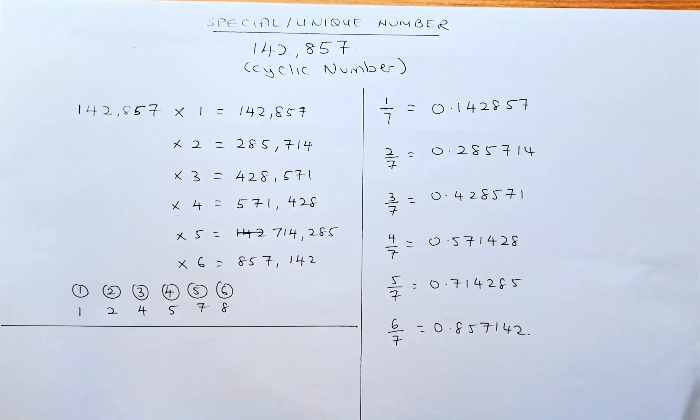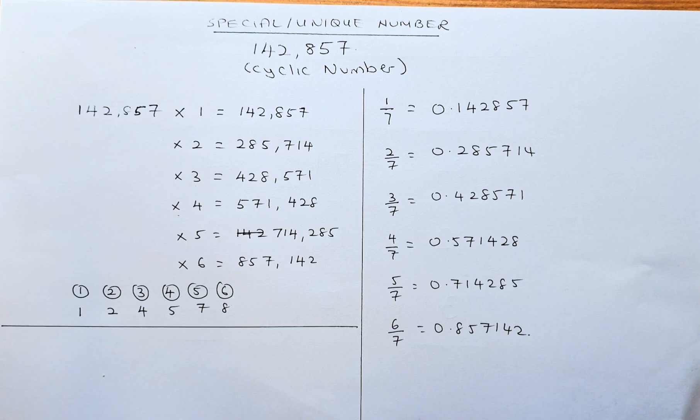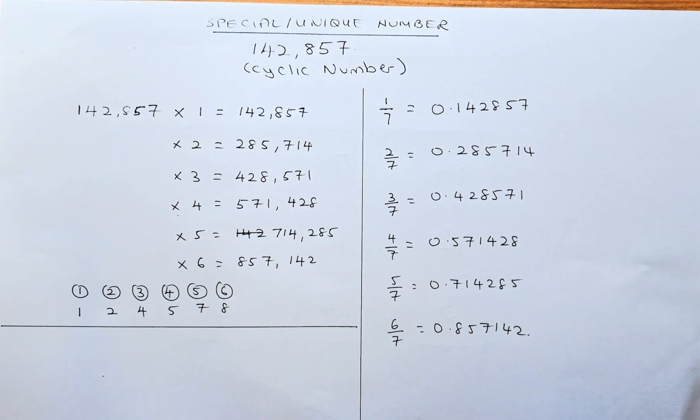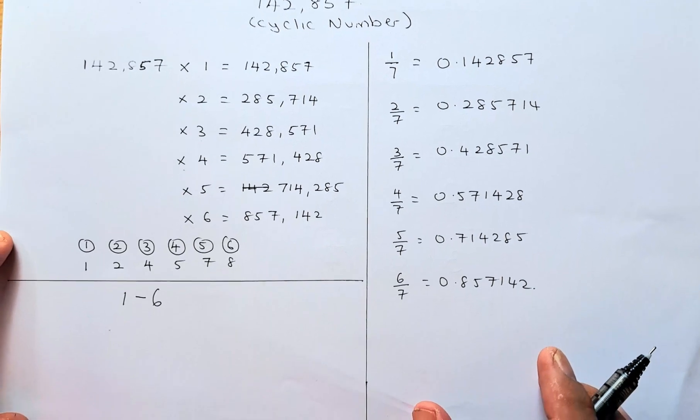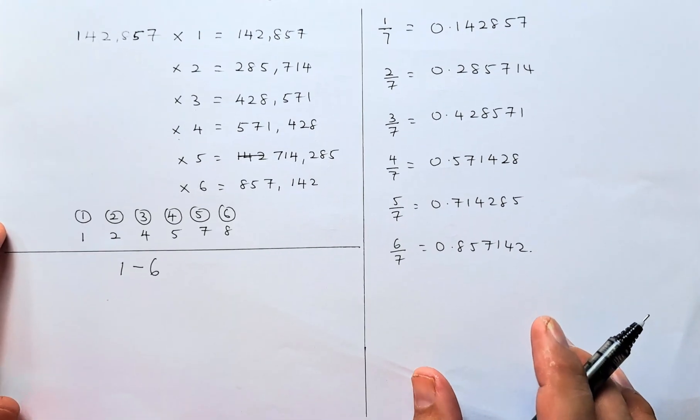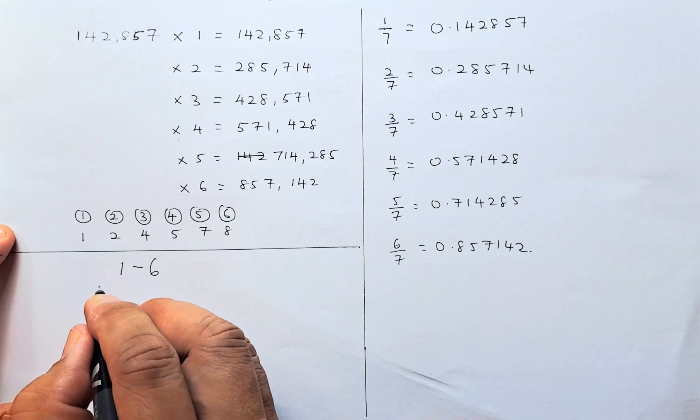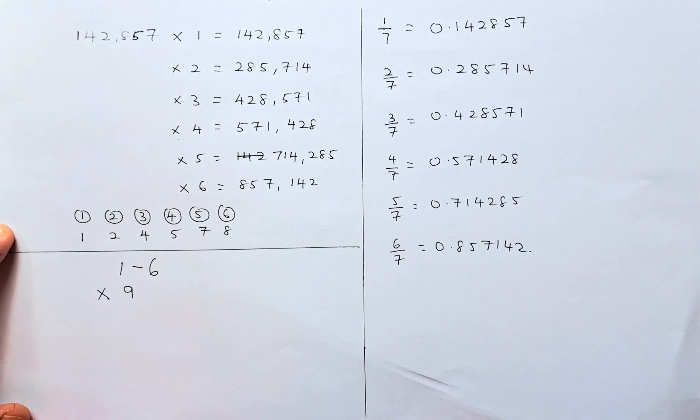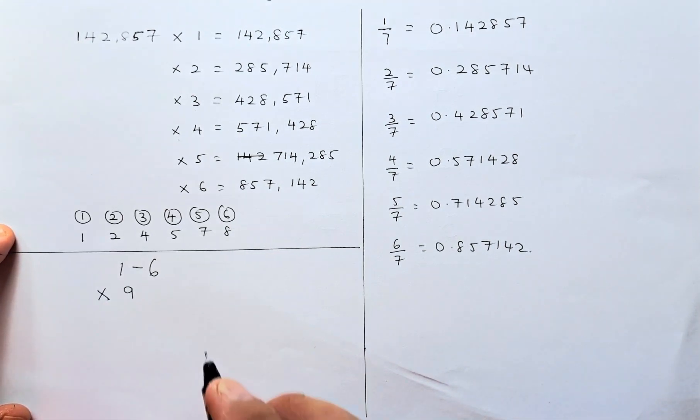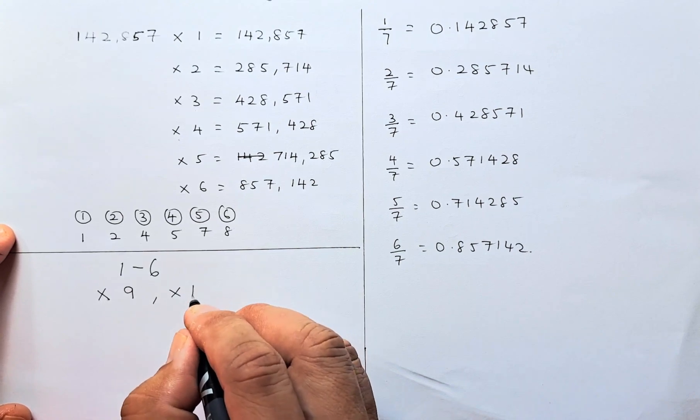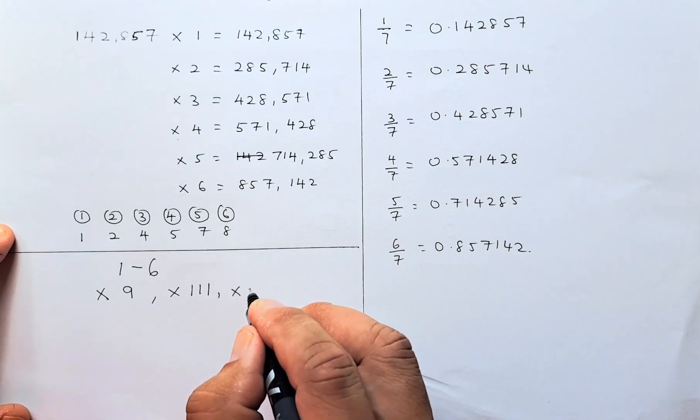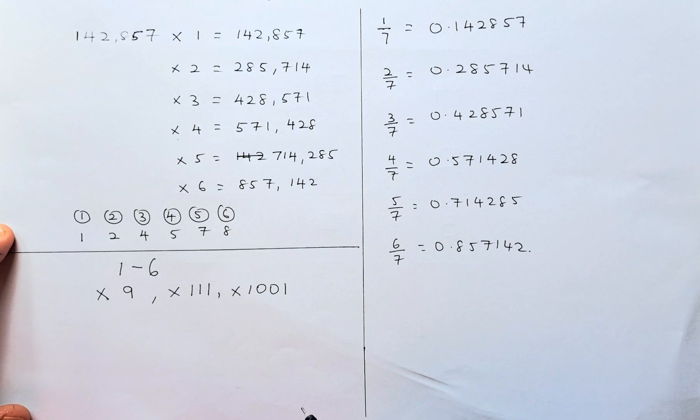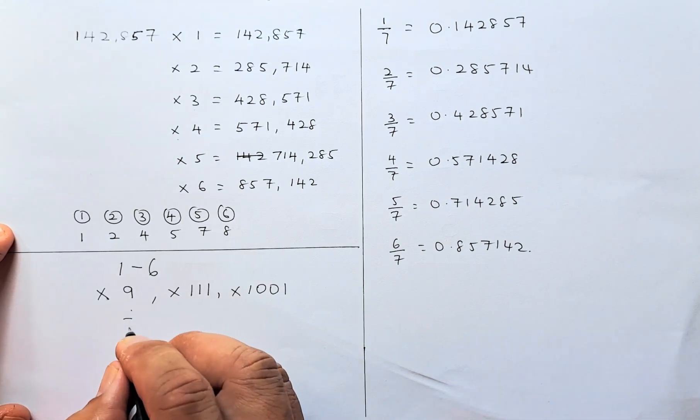This is an interesting property of the number 142857. And before we end this video, I would like to do a trick on it. You are going to choose a number from 1 to 6. Once you have done it, you are going to multiply by 9. Then, you are going to multiply by 111. Then, you are going to multiply by 1001. And last but not least, you are going to divide by 7.